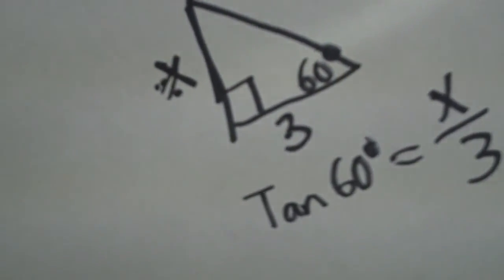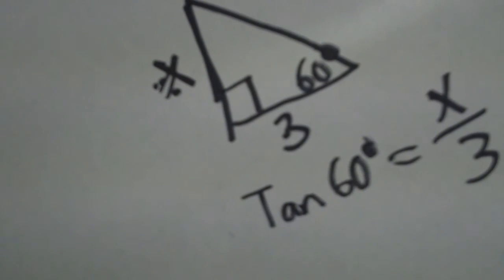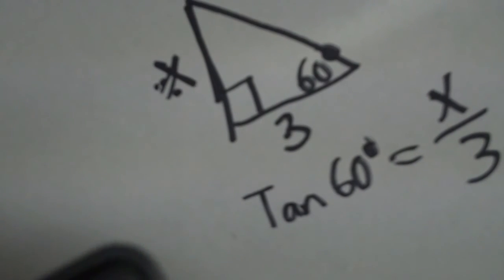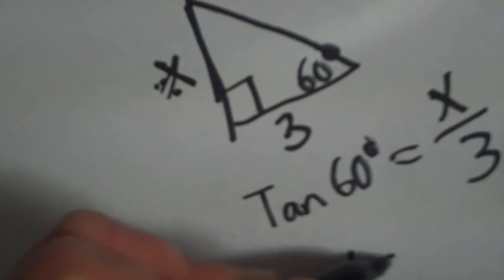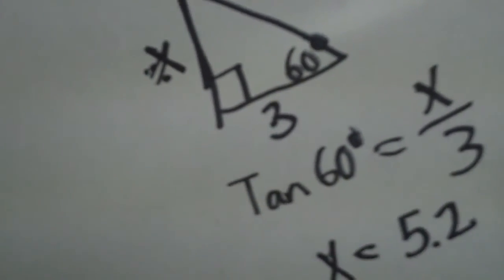Now I can do that in my calculator, so I'll type in 60—I need to make sure that I'm in degrees, good—tangent 60, and then times three, and that gives me 5.19, so I'm going to say it's 5.2, being very lazy. So my x value is 5.2.